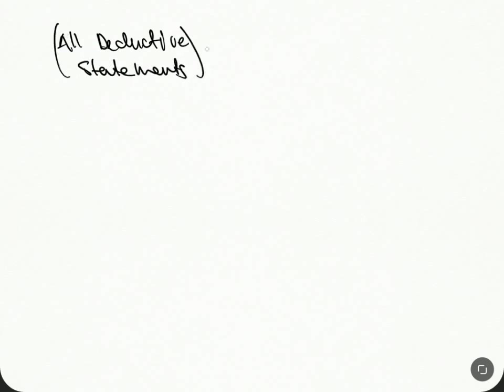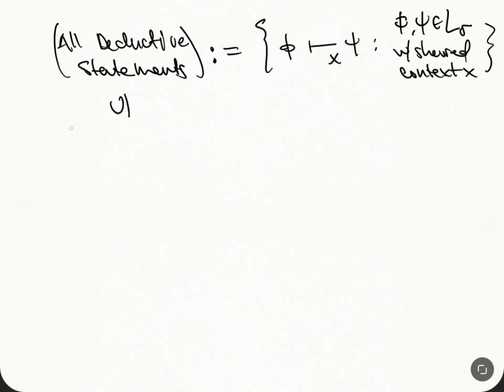This is syntactical, it has no meaning, these are just symbols. Formulas where this guy and this guy are in the language here with a shared context x. So all possible strings like this. Starting from a set of formulas we can ask - these are all possible, this is like the crazy ones.